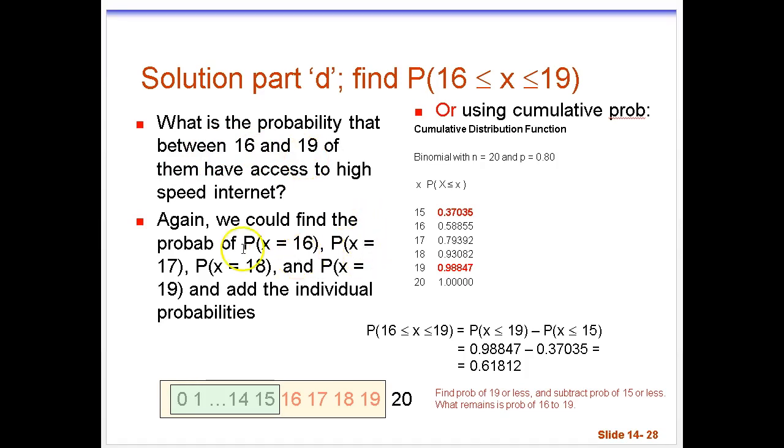Now one way to do this problem would be to go find the probability of exactly 16, exactly 17, 18, 19, and add those four numbers together. And if I were to go to Minitab I could do that and get my answer. So that's one way to do it.